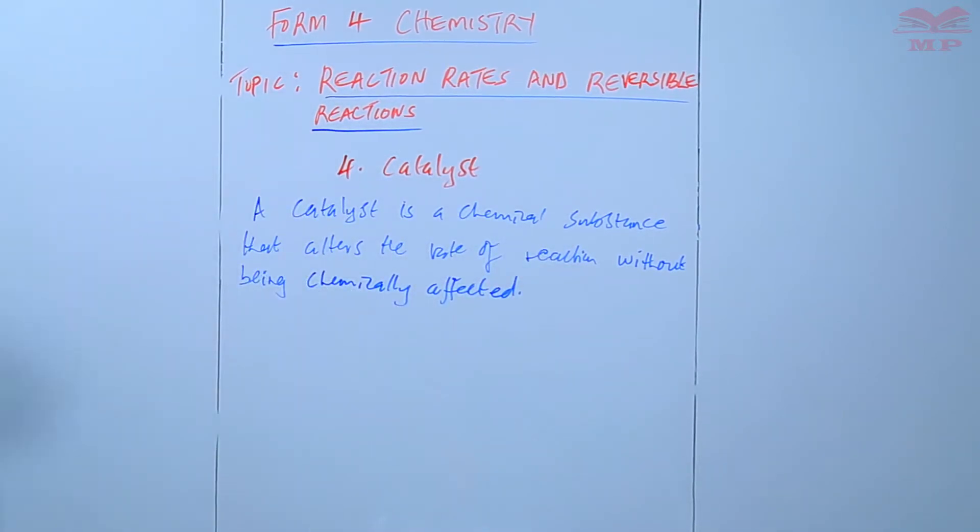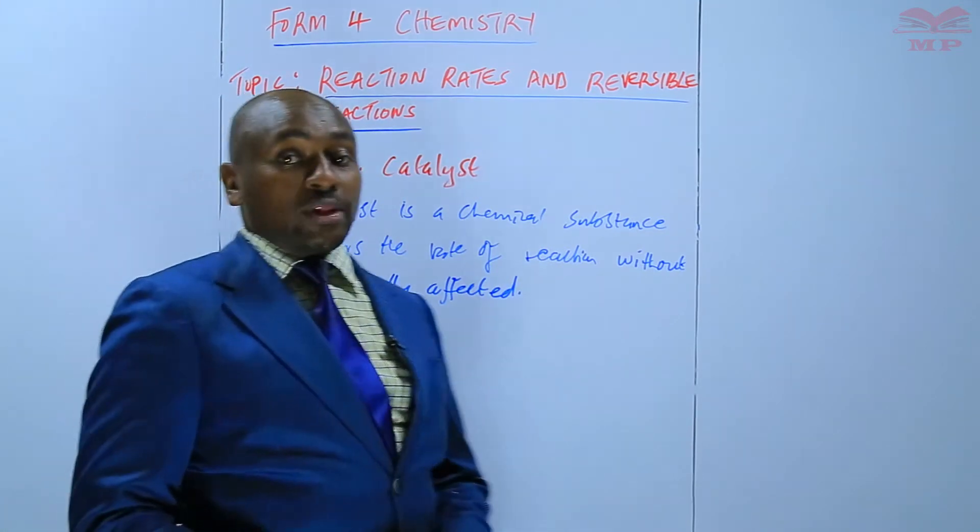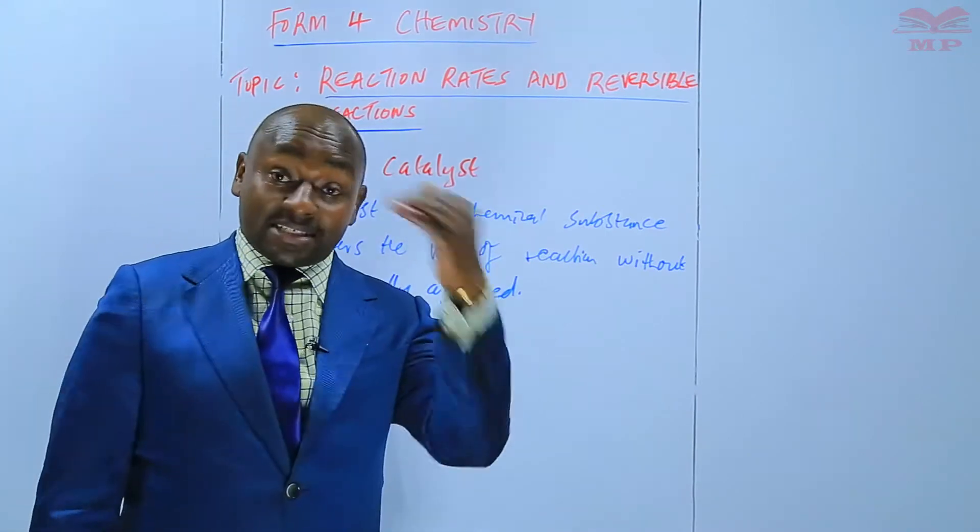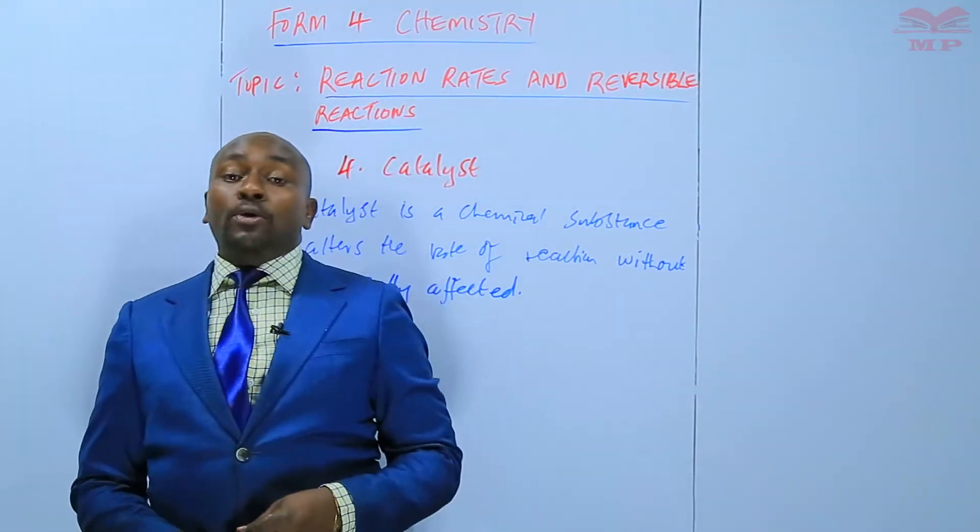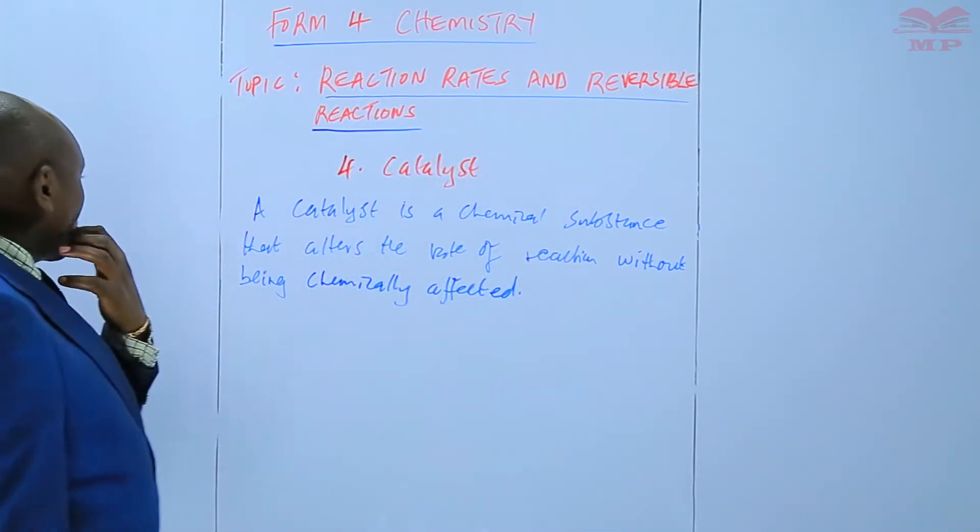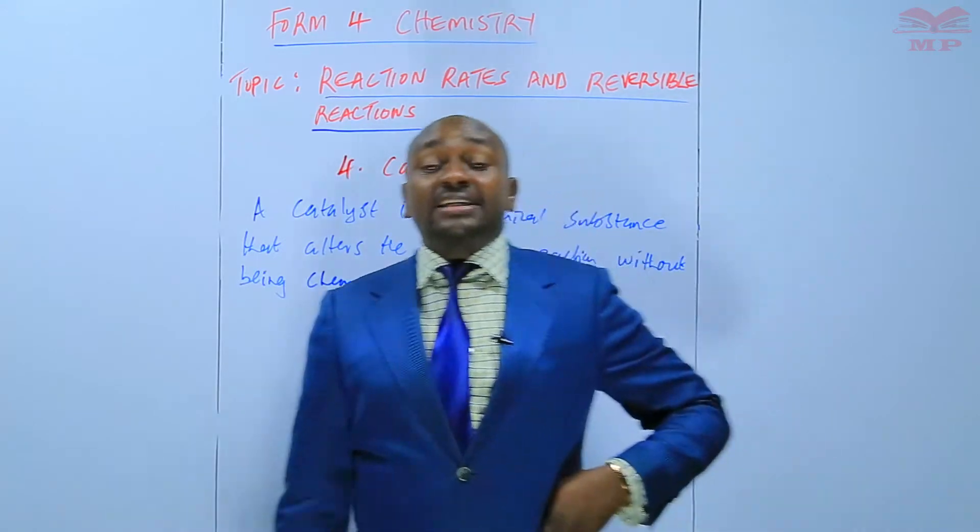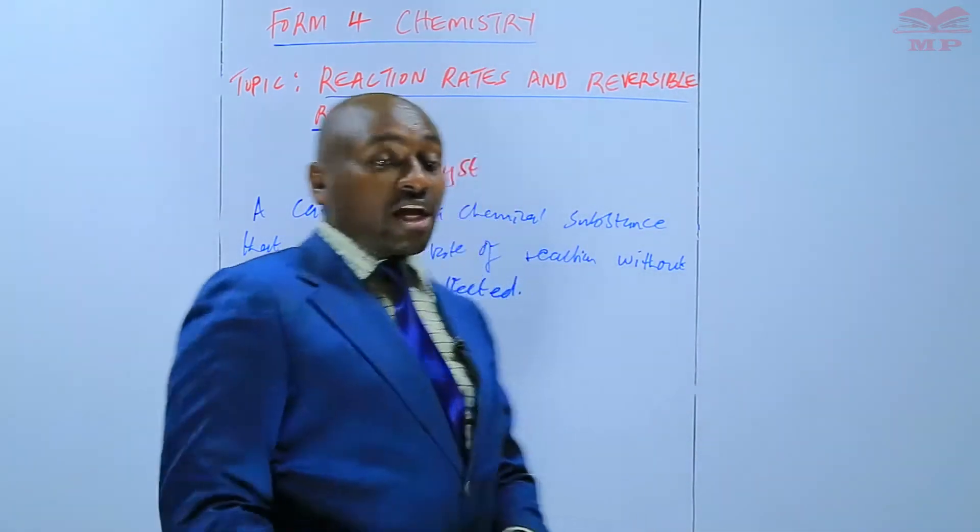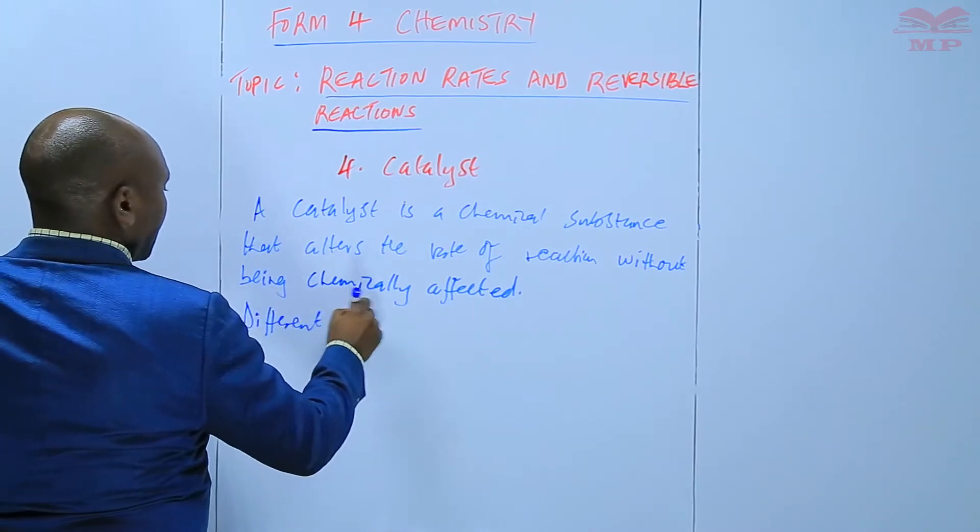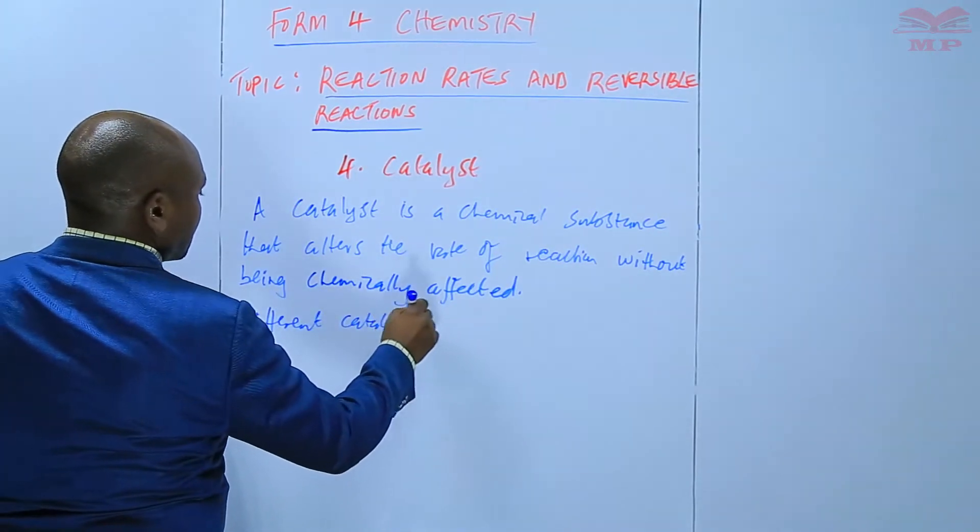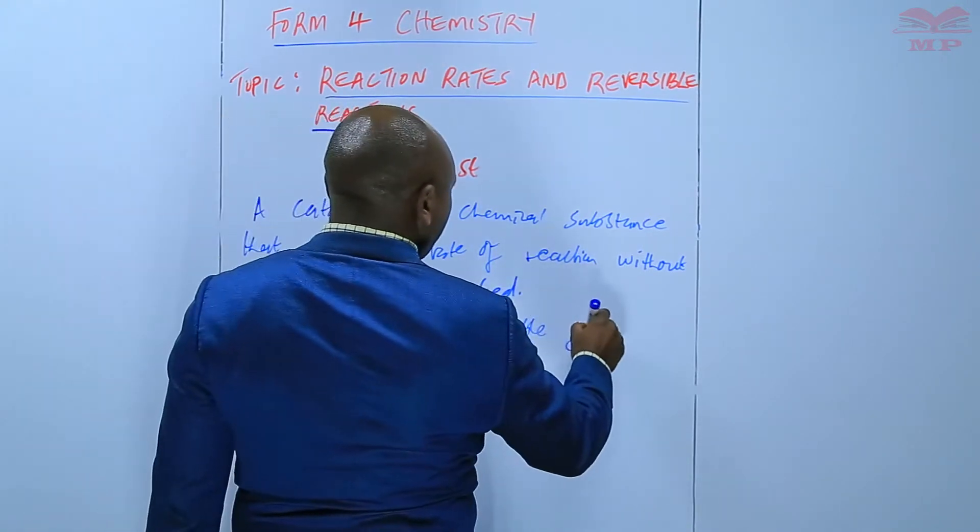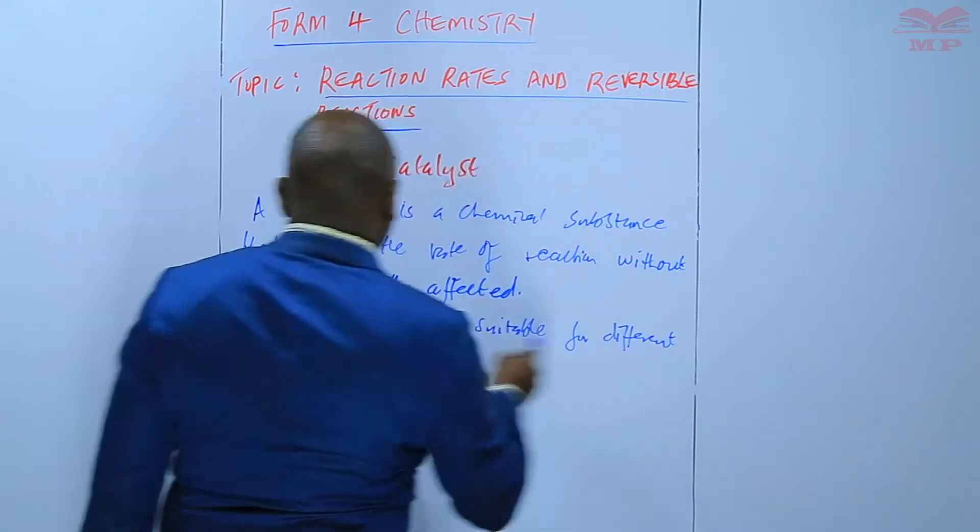We have some chemical substances that we use so that the reaction can happen at a faster rate so that we can get the products within a short time. Different catalysts are suitable for different reactions.